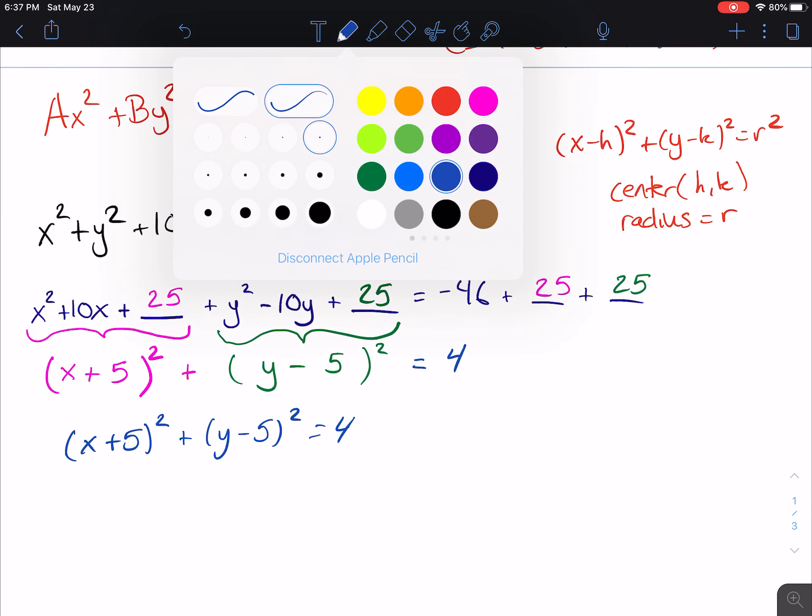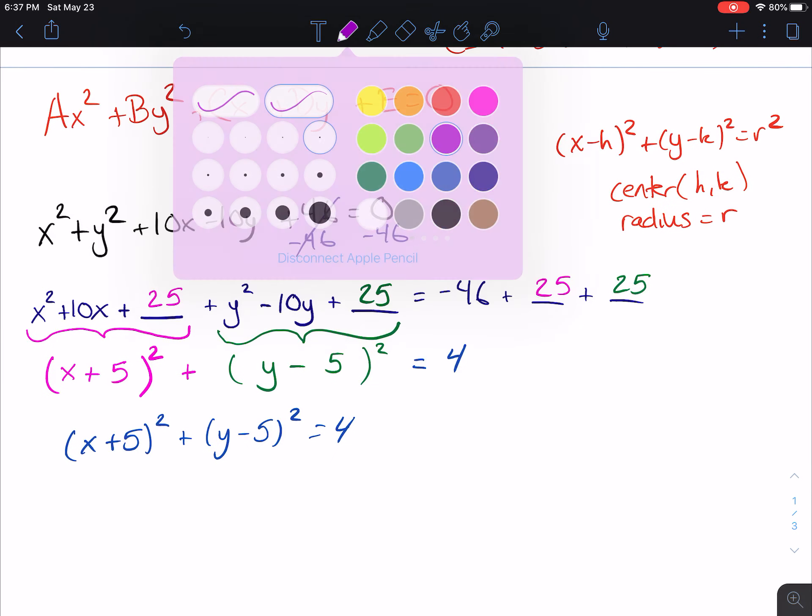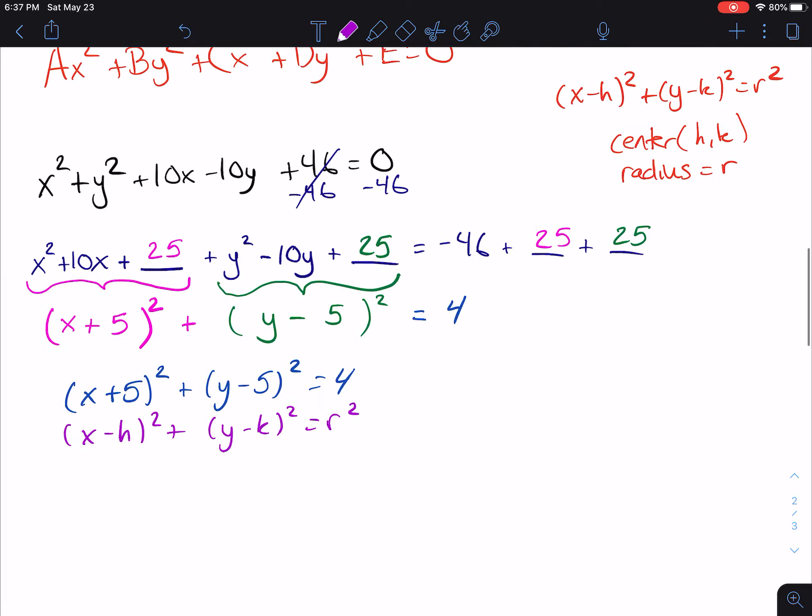Wait a minute. Doesn't that look exactly like x minus h squared plus y minus k squared equals r squared? I've been able to complete the square twice and actually take this circle from standard form to center radius form. And that's important because the question that I'm actually being asked here is what is the center and what is the radius?